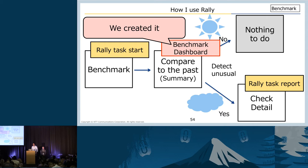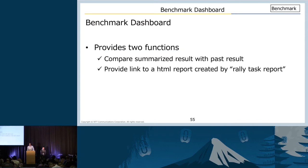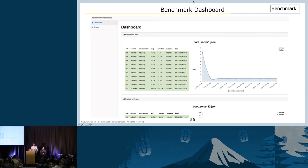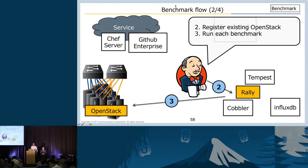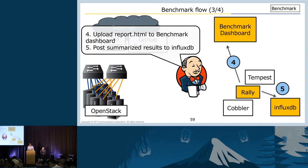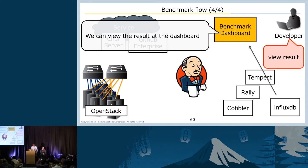The benchmark dashboard is a website to check benchmark summary for each deployment. It has two functions: one is comparing summary with the past, and the second is providing links to HTML reports created by Rally. The x-axis is commit ID and the y-axis is duration time — this way we check summary results for each deployment. For the process: first, create a Rally container from the image; second, register OpenStack to Rally; third, start each benchmark against OpenStack. When each benchmark finishes, summary results are sent to InfluxDB and HTML reports are sent to the benchmark dashboard. This way, we can view results on the benchmark dashboard.